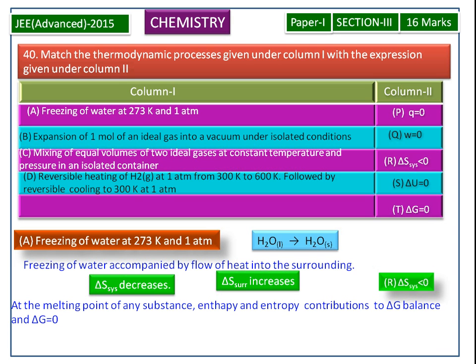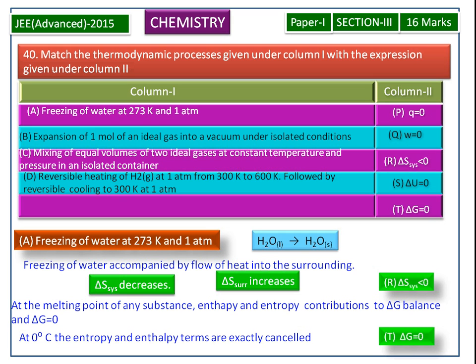The freezing point of water in liquid state and melting point of water in solid state is 0 degree Celsius. At 0 degree Celsius, the entropy and enthalpy terms are exactly cancelled, so the T term is also correct for the A process. Therefore, for freezing of water at 273 Kelvin and 1 atmospheric pressure, R and T terms are the correct answers.